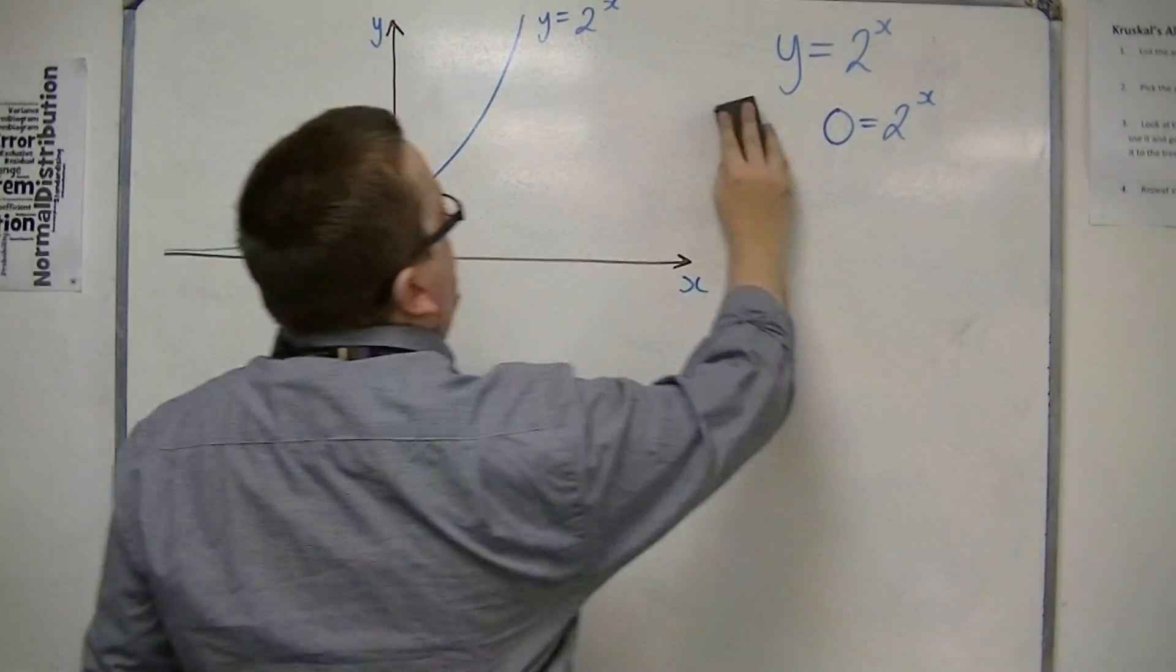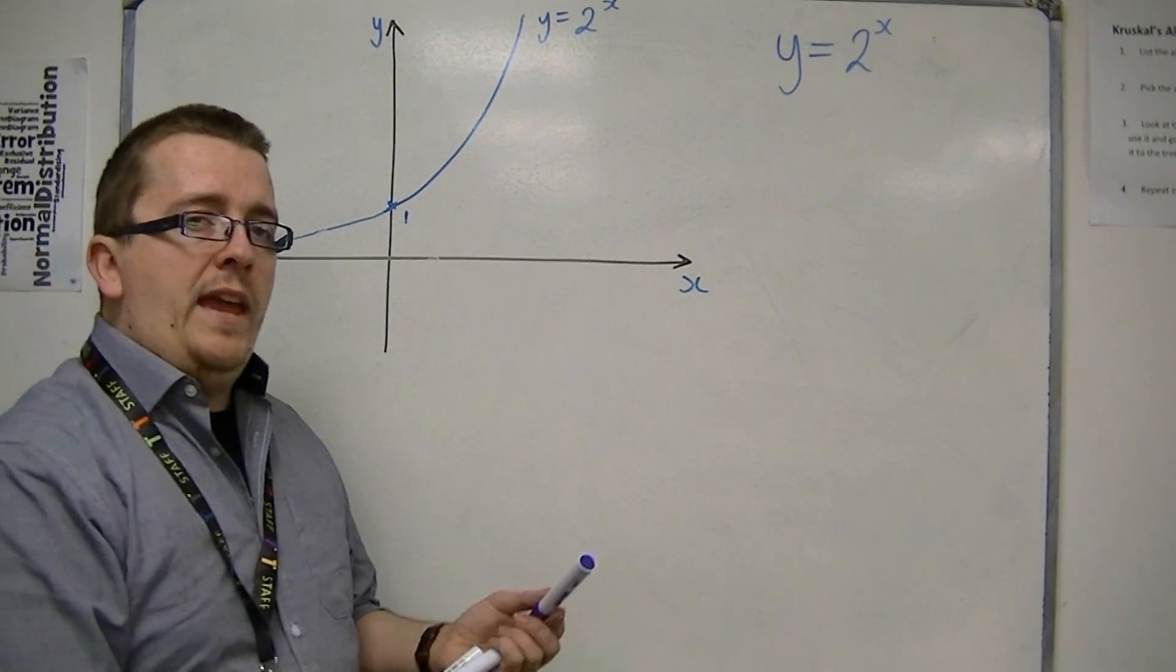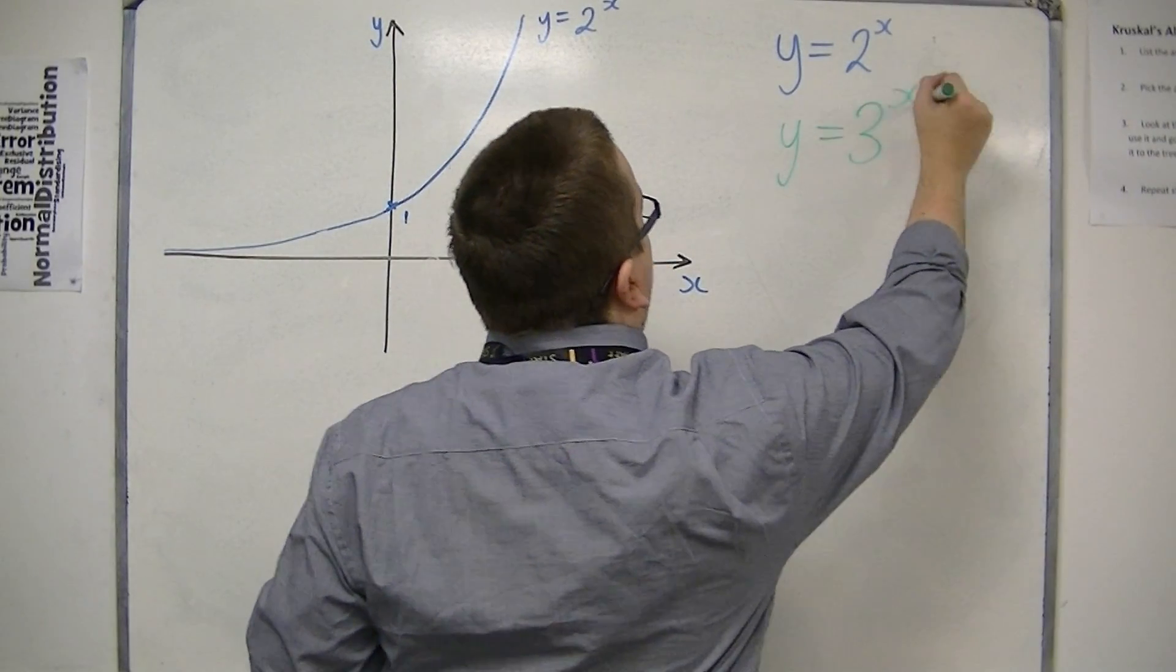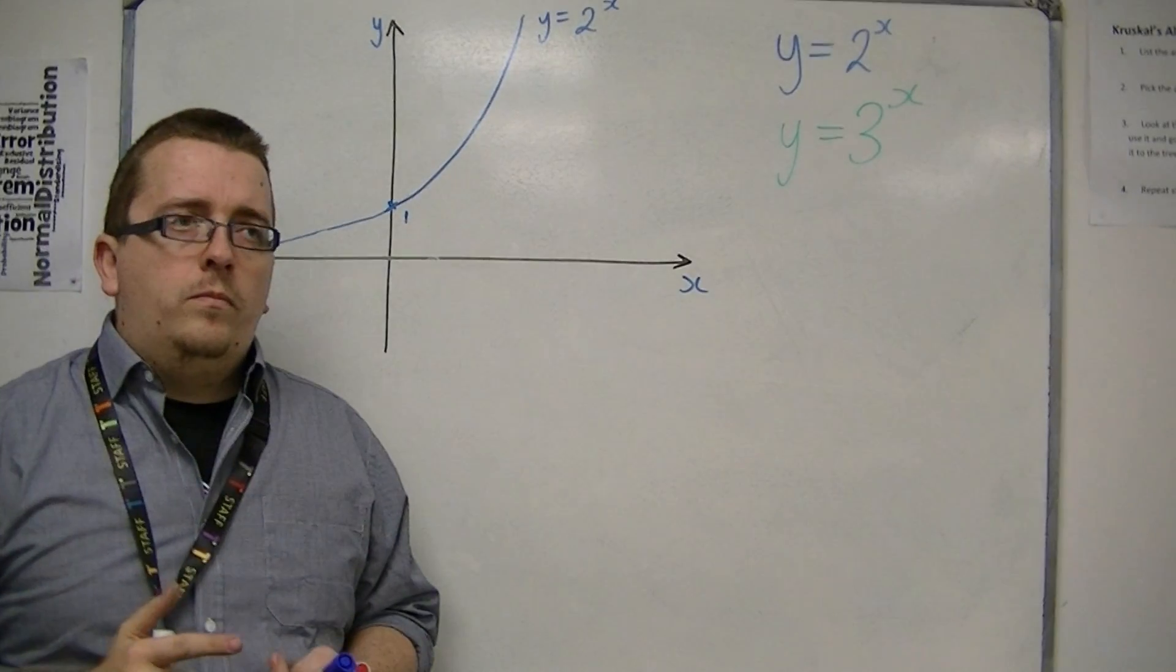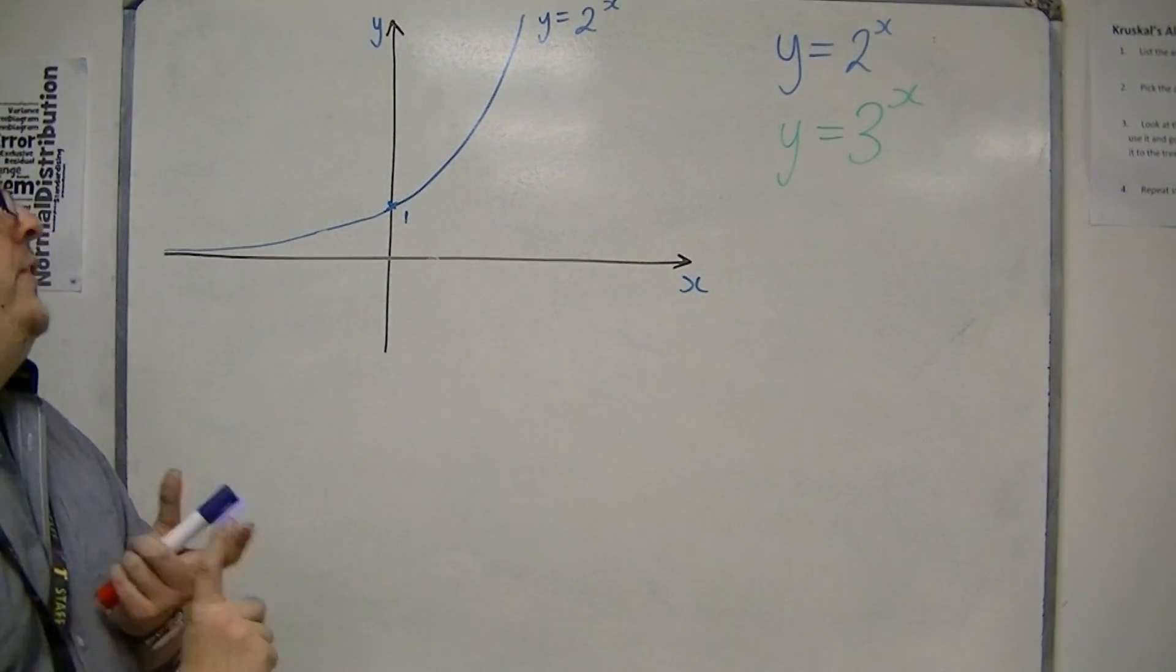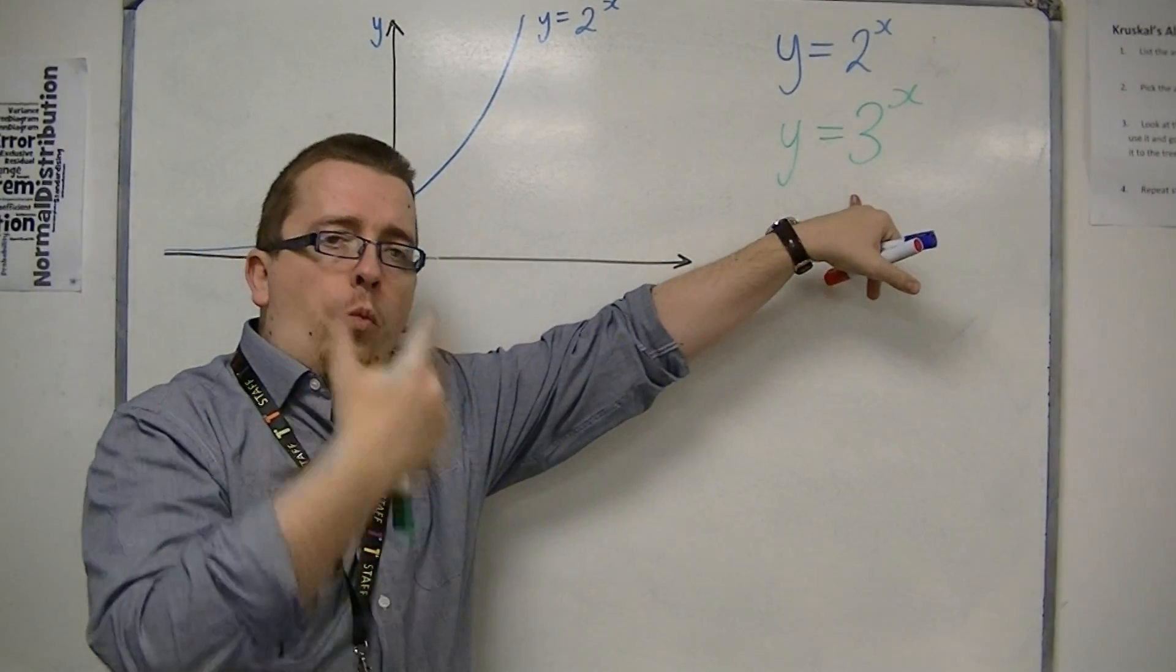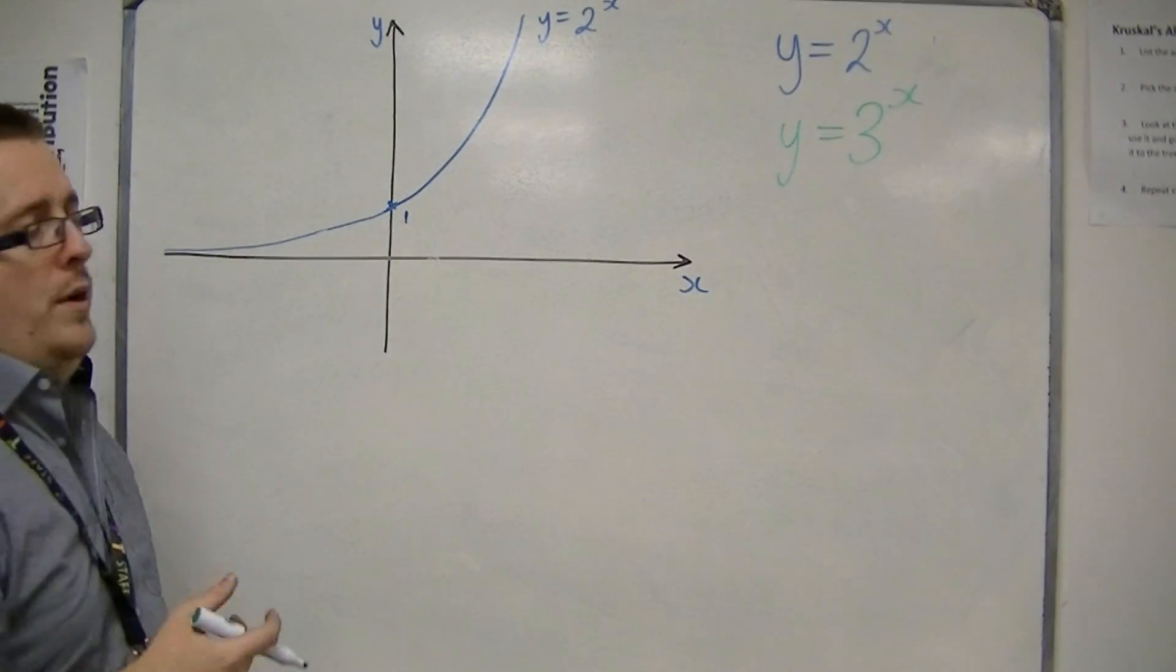Now if that's y is equal to 2 to the x, then how would I sketch y is equal to 3 to the x? Well, we do it in exactly the same way. We think, well, when x is 0, y is equal to 3 to the 0, which is 1. So it still goes through that point.